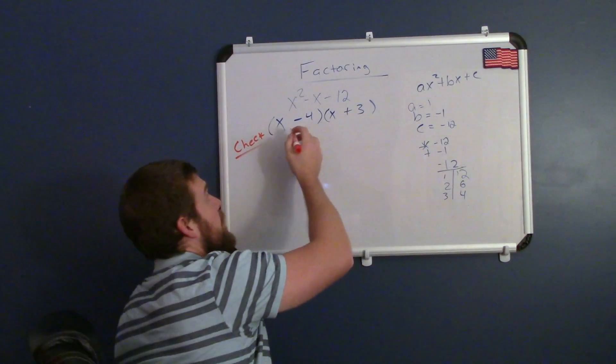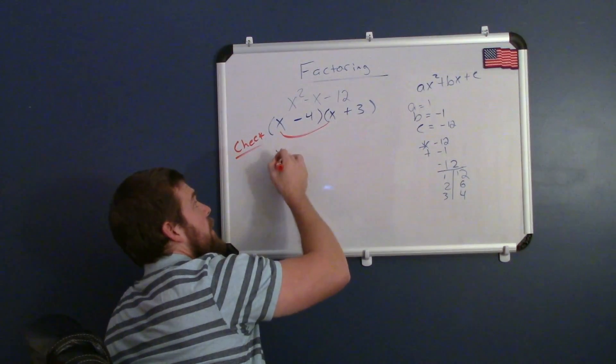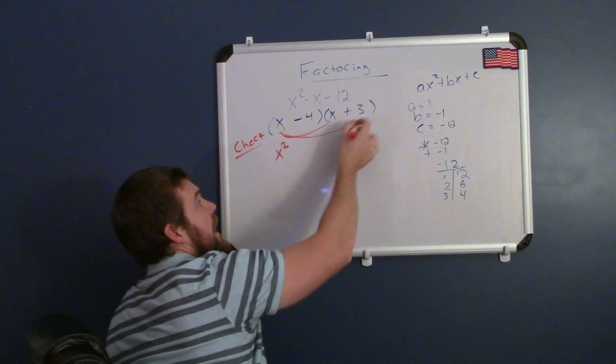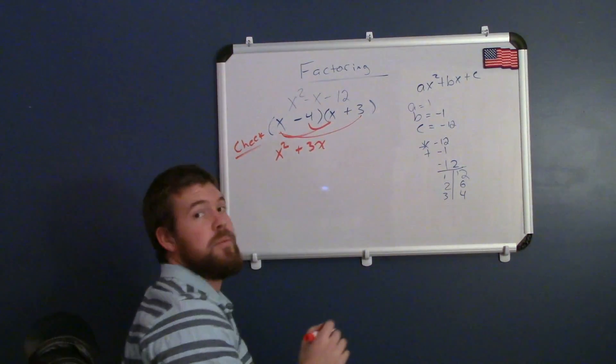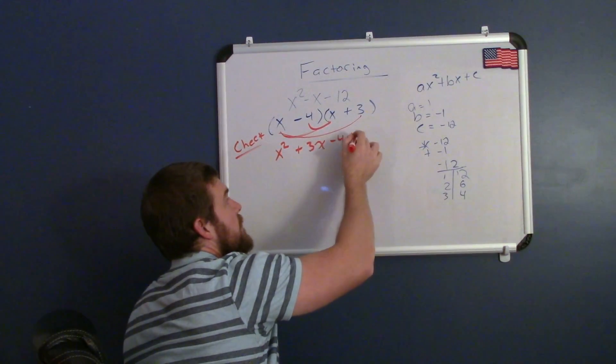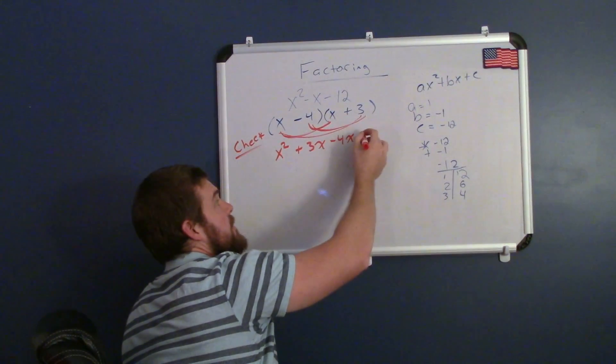Okay, so I check here, multiplying the first two parts together, I'll get an x squared, then I take the x times the 3 and get a positive 3x. Negative 4 times x is a negative 4x, and negative 4 times 3 is a negative 12.